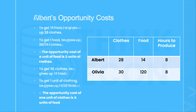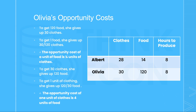Now let's look at Olivia's opportunity costs. To get 120 units of food, she must give up 30 units of clothes. Therefore, dividing both sides by 120, I know that to get one unit of food, she must give up 30 over 120, or one quarter units of clothes. So for Olivia, one unit of food has an opportunity cost of one quarter units of clothes. On the other hand, to get 30 units of clothes, she must give up 120 units of food. Therefore, dividing both sides by 30, I know that to get one unit of clothes, she must give up 120 over 30, or four units of food. Once again, you will notice that the two opportunity costs are simply reciprocals of one another.